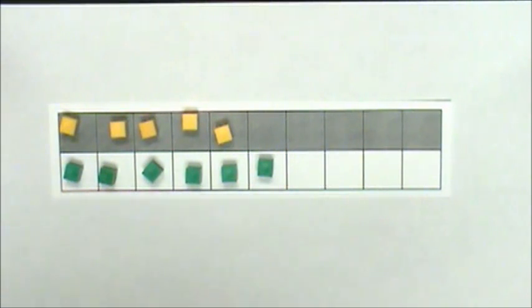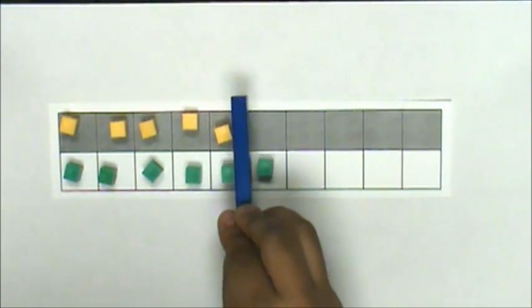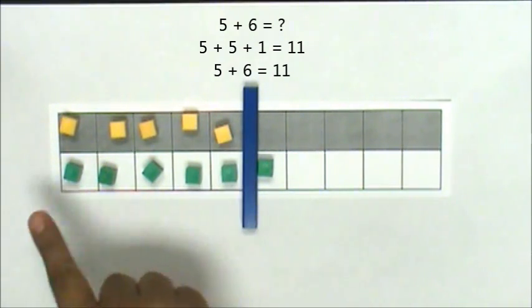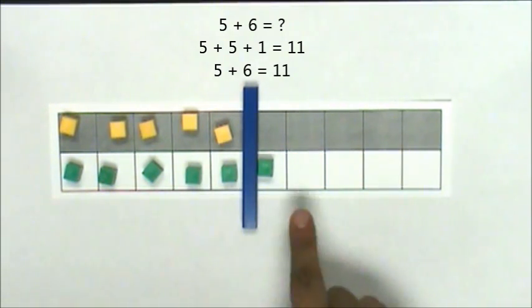As I look at my doubles mat, I can see 5 and 5. 5 and 5 is 10, and one more is 11.